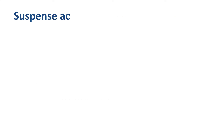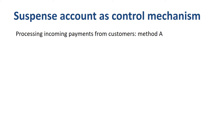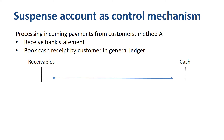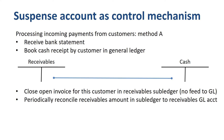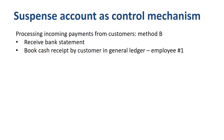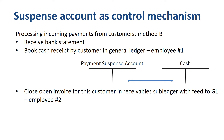The last section of this video is about turning the concept of suspense accounts around, and proactively using it as a control mechanism. Let's say you have historically processed incoming payments from customers using method A: you receive a bank statement, book the cash receipt by customer in the general ledger by debiting cash and crediting accounts receivable, have the same person close the open invoice in the receivables subledger, and periodically reconcile the receivables subledger to the general ledger account. An alternative, method B, uses a suspense account to your benefit: employee number 1 books the cash receipt by debiting cash and crediting a payment suspense account. A different person, employee number 2, closes the open invoice in the receivables subledger, and the system feeds this data into the general ledger by debiting the payment suspense account and crediting receivables.